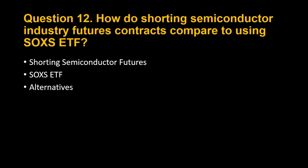Question 12: How do shorting semiconductor industry futures contracts compare to using the SOXS ETF? Both shorting semiconductor industry futures contracts and using the Direxion Daily Semiconductor Bear 3x Shares ETF, SOXS, offer ways to potentially profit from a decline in the semiconductor sector, but they come with different risks and considerations. Here's a breakdown to help you compare.